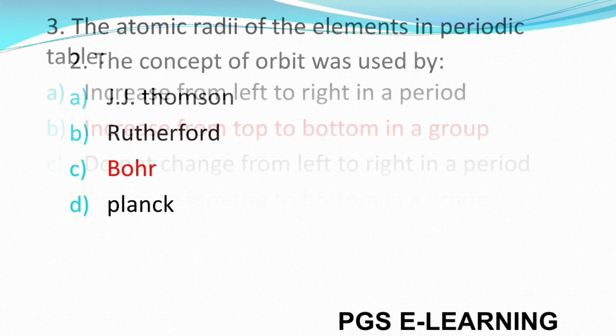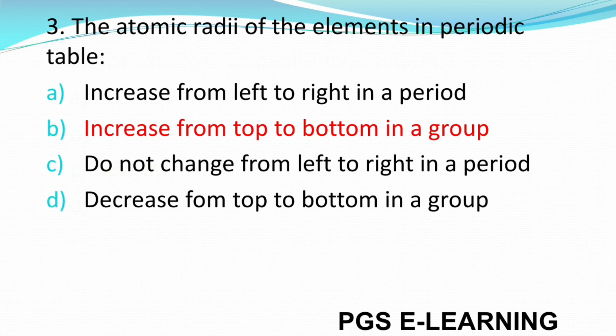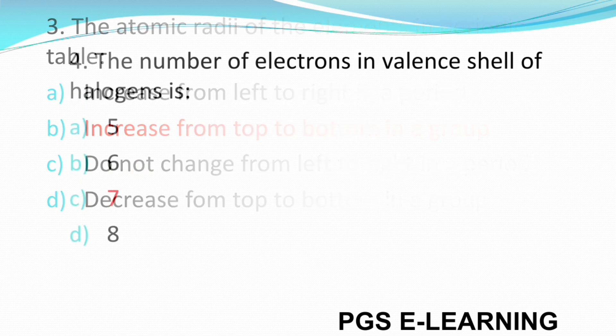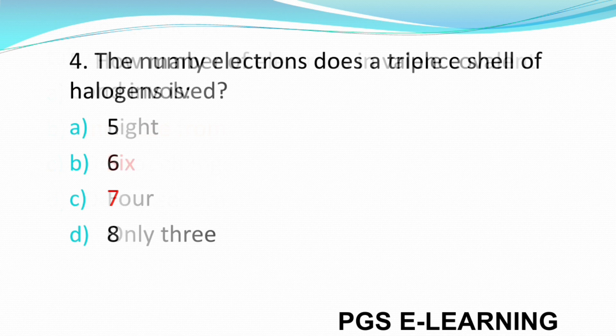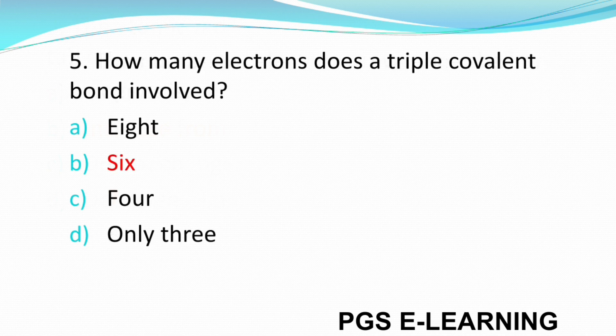Q3: The atomic radii of the elements in the periodic table. Correct answer is: it increases from top to bottom in a group. Q4: The number of electrons in the valence shell of halogens is seven.